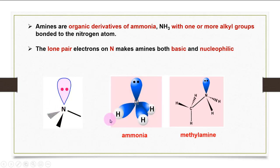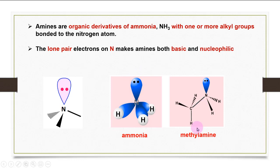For example, the structure of ammonia has nitrogen with three hydrogen atoms attached to it and a lone pair. For methylamine, the nitrogen has two hydrogens and one alkyl group, with one lone pair.